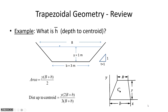The example we just worked had a rectangular channel. Trapezoidal channels are a little more tricky. Part of the momentum depth diagram involves multiplying the cross-sectional area by the depth to the centroid, h-bar. In a rectangular channel, the depth of the centroid is simply the flow depth divided by 2. But for a trapezoidal channel, the depth of the centroid is less than halfway down because the side areas bring the average above the halfway point.